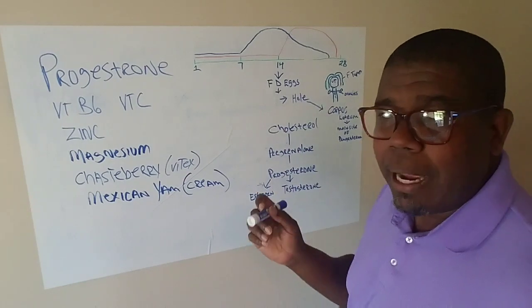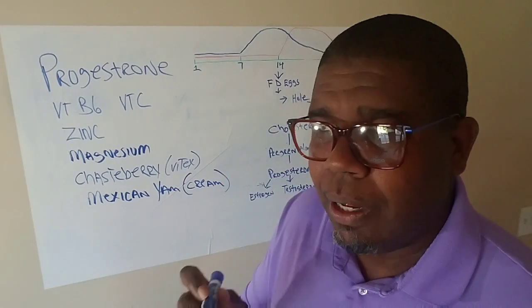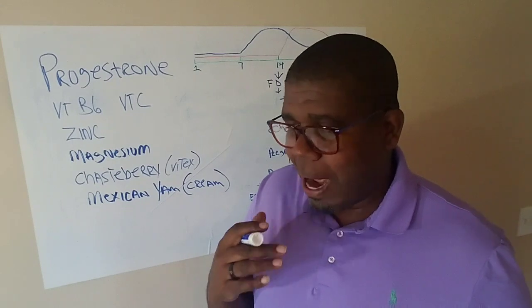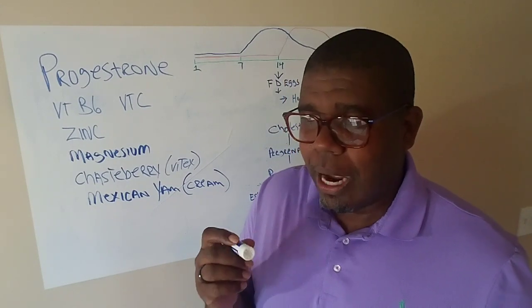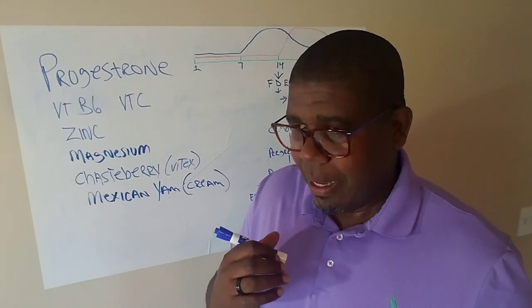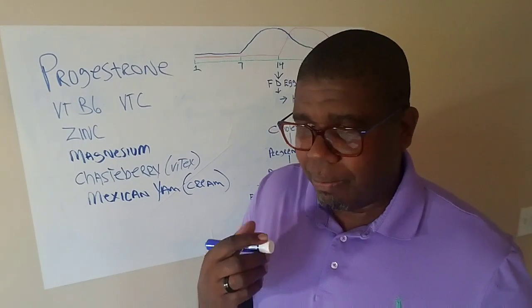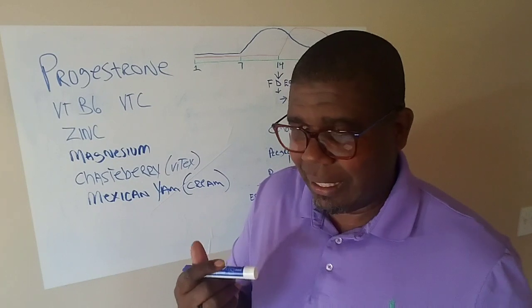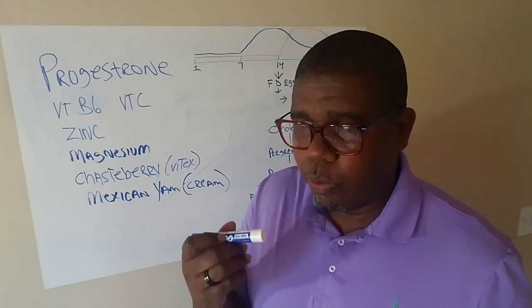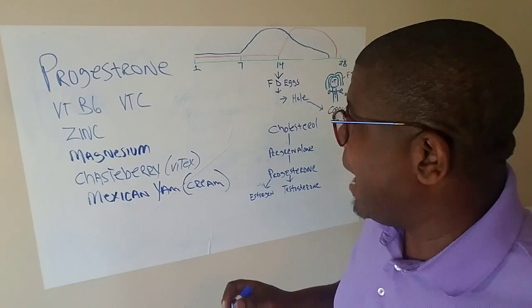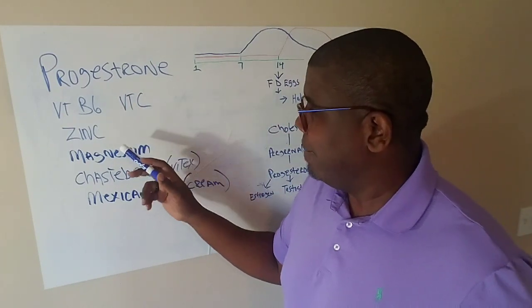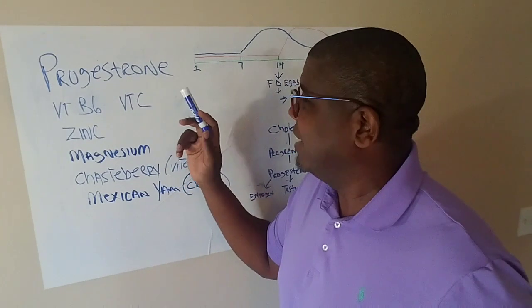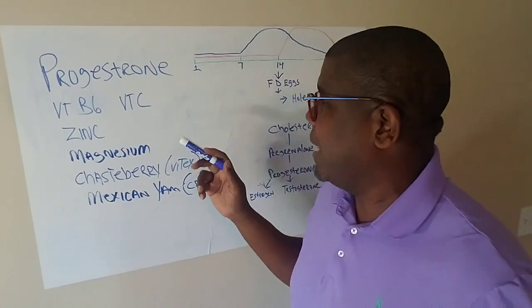We'll come back and talk much more deeper about estrogen, but remember, you want to try to avoid estrogen mimicking products in the society. You want to try to avoid foods that have been given a label as estrogen producing foods. You want to try to avoid synthetic estrogens that produce more estrogen in the body. You want to add vitamin B6, vitamin C, zinc, magnesium, chasteberry, and Mexican yam in order to raise your levels of progesterone in the system.